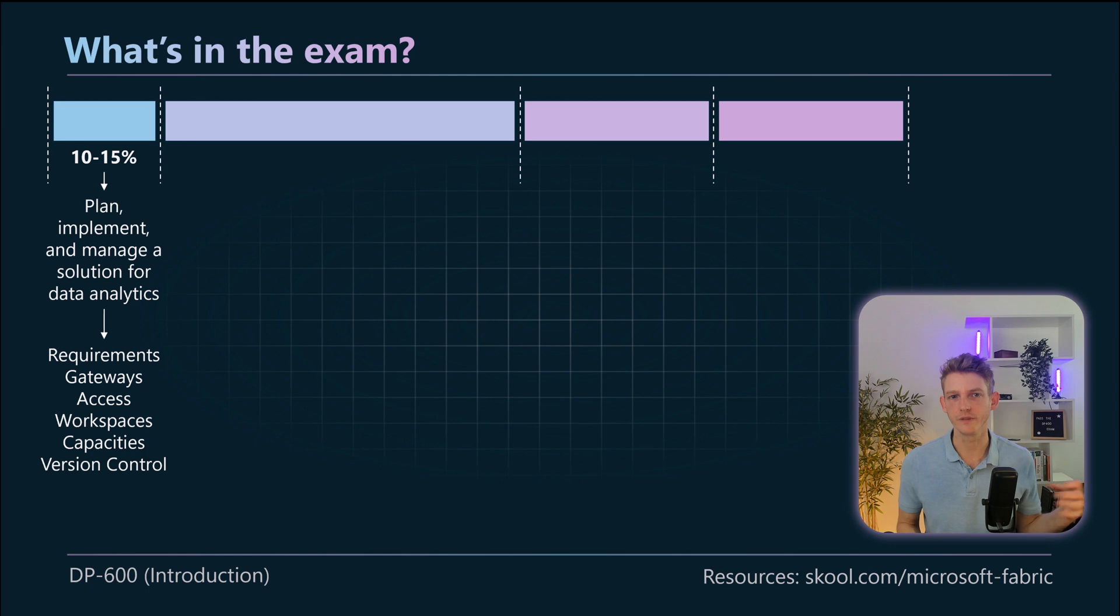Another important section of the exam and being an analytics engineer in general is version control. You'll need to understand how to set up version control for Azure DevOps, understand some of the settings and the configuration options that that entails, as well as some of the deployment pipeline functionality. Now this is not a completely exhaustive list of what's in that section of the exam. We'll go through each of those in a bit more detail, it's just the high level areas that are covered in that section.